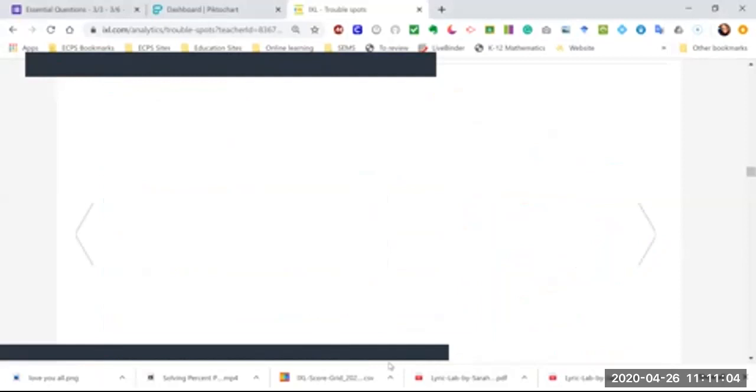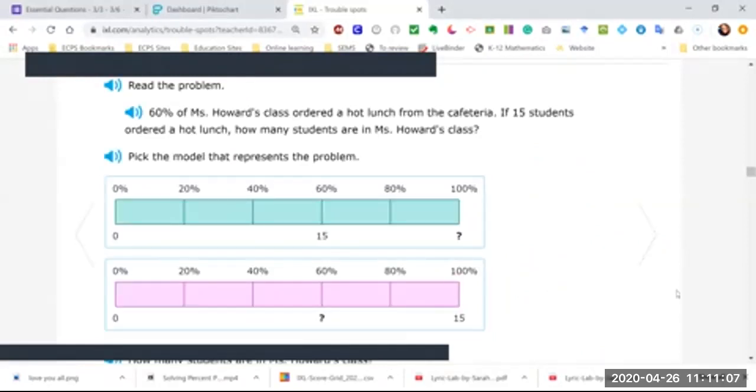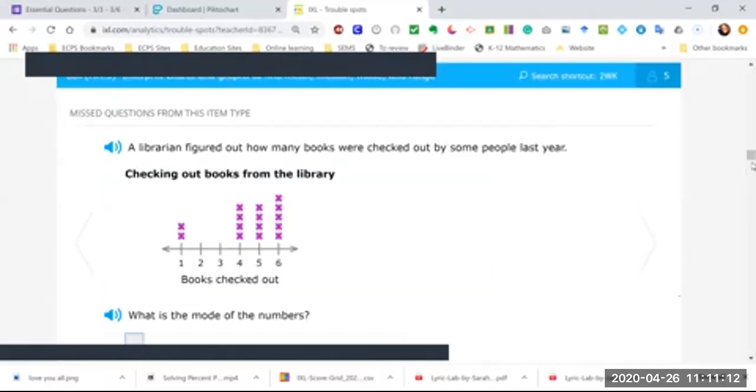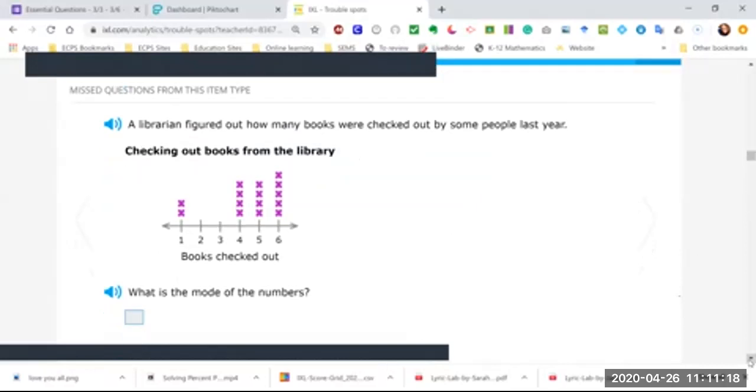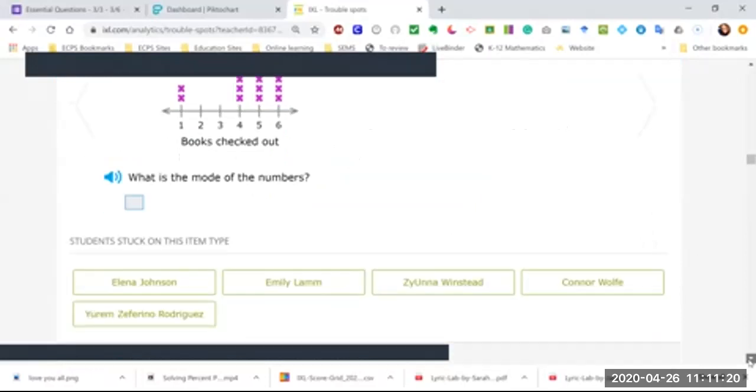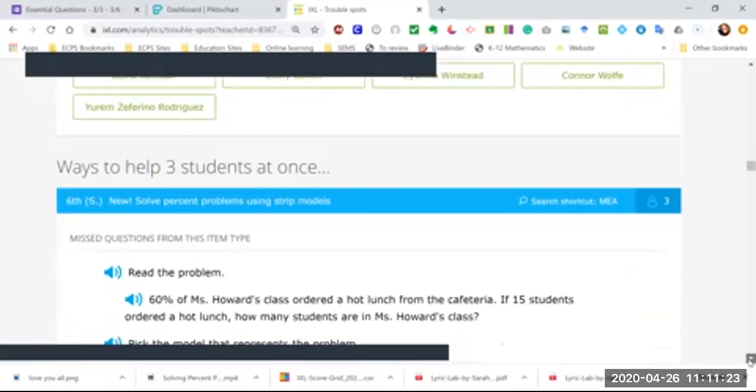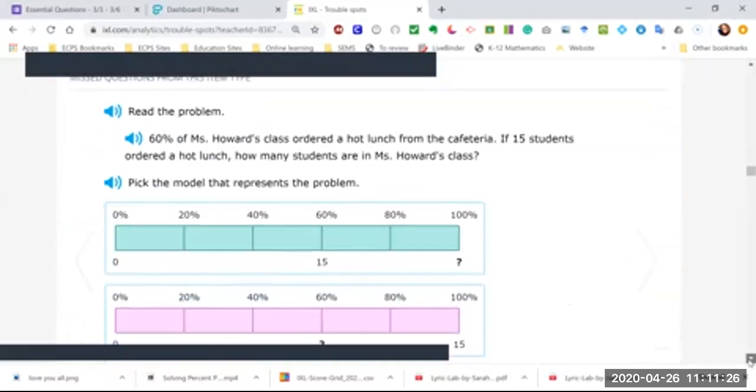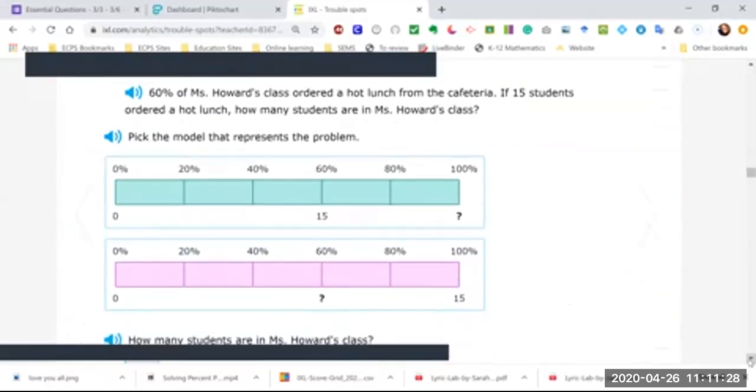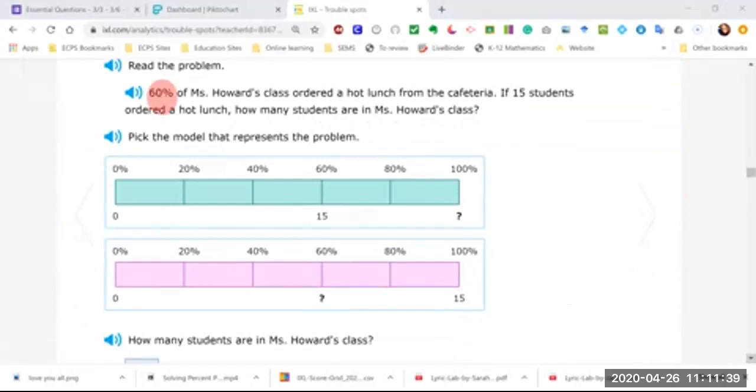Okay, so 60 percent of Miss Howard's class ordered a hot lunch from the cafeteria. If 15 students ordered a hot lunch, how many students are in Miss Howard's class? All right, so let's start with highlighting our important information here. First of all we know 60 percent of them ordered a hot lunch, and that equals 15 because 15 ordered a hot lunch.